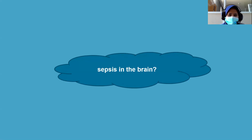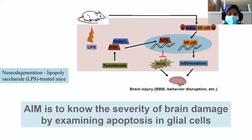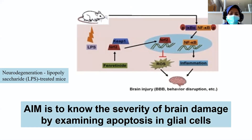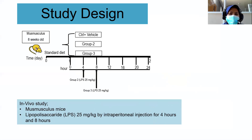We wondered what sepsis does to the brain. The aim of our study is to determine the severity of brain damage by examining apoptosis in glial cells.